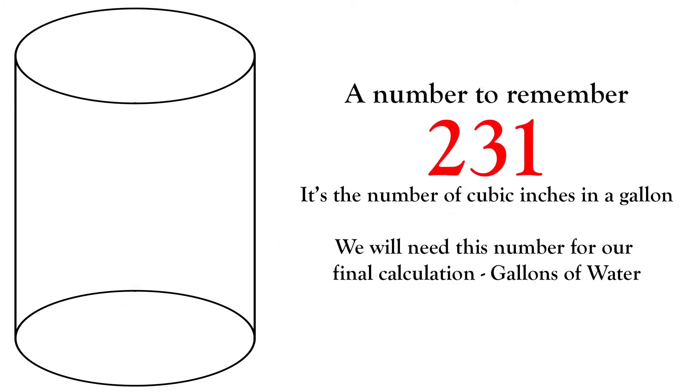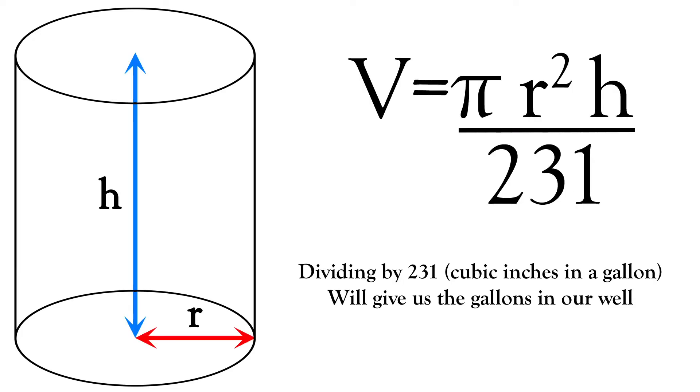And when it's all said and done, we've got to remember the number 231 because that's the number of cubic inches in a gallon. Dividing the results of our formula by this number will give us the amount of gallons we have in our well.